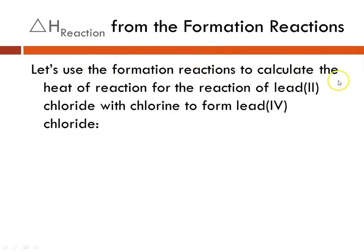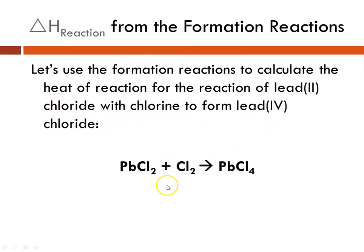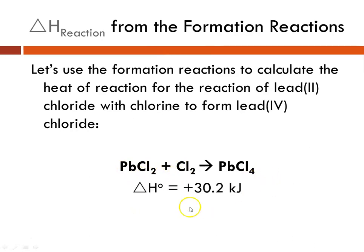We're going to calculate the delta H of reaction using the formation reactions. Specifically, we'll calculate the heat of reaction for the reaction of lead(II) chloride with chlorine to form lead(IV) chloride: PbCl₂ + Cl₂ → PbCl₄. Looking it up, the delta H of formation for this is plus 30.2 kilojoules.